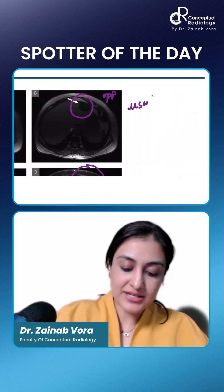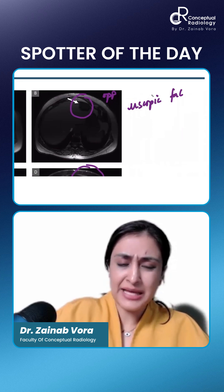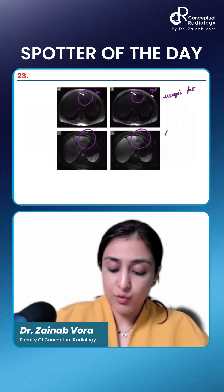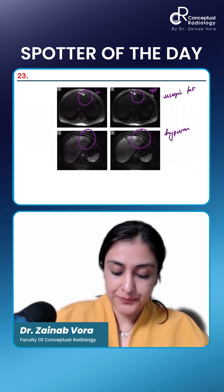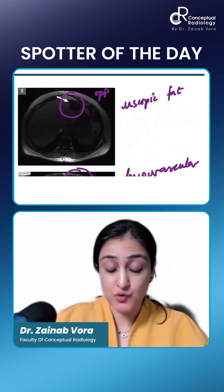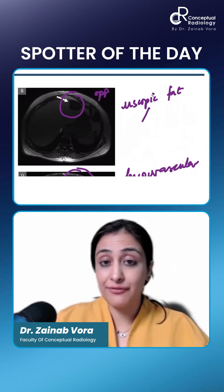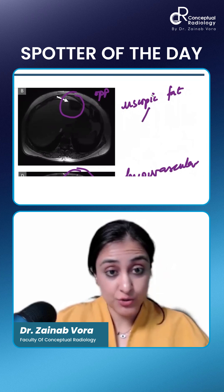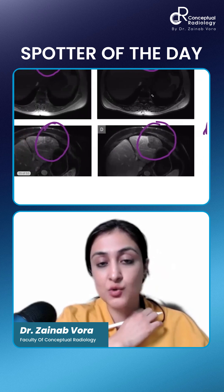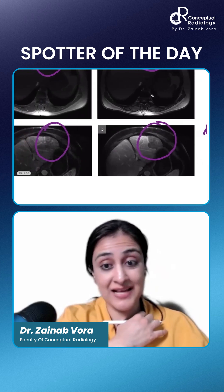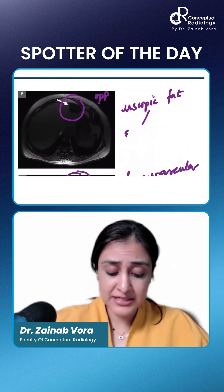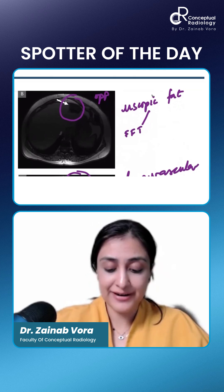Microscopic fat with hypovascular nature. What are you starting to think of? What all liver masses can have microscopic fat? One is focal fat infiltration — which this is not, because it is displacing the vessels, not allowing vessels to infiltrate. It has mass effect. So it is not focal fat infiltration for sure. First differential is out: focal fat infiltration.